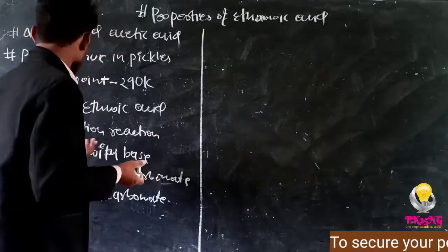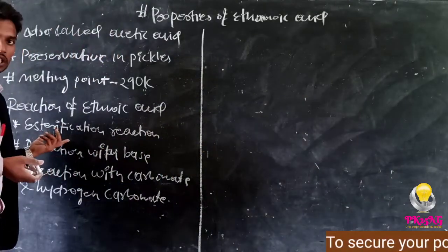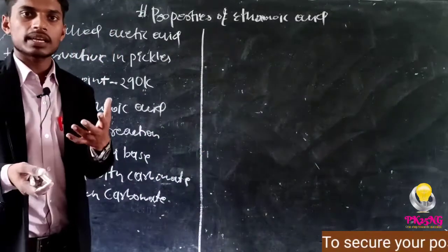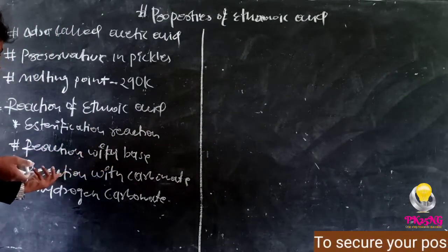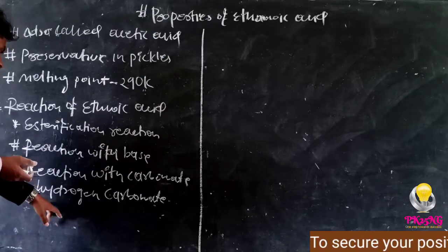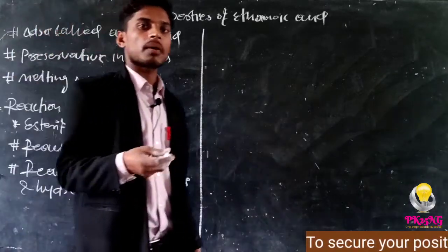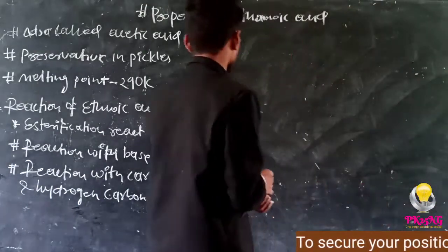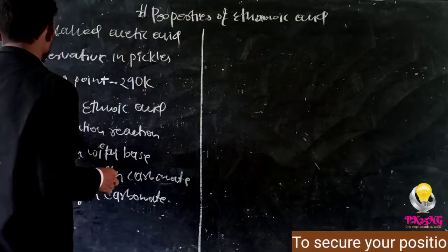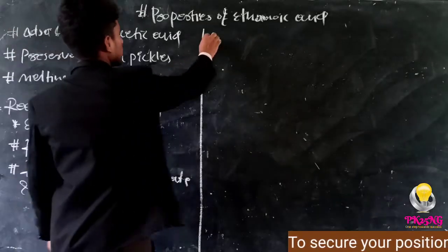Next, we will look at the reactions. We will see three reactions. First we will talk about esterification reaction, that means how esters are formed. Next reaction we will talk about when it reacts with base. Then we will see what happens when it reacts with carbonate, sodium carbonate, and then sodium bicarbonate.